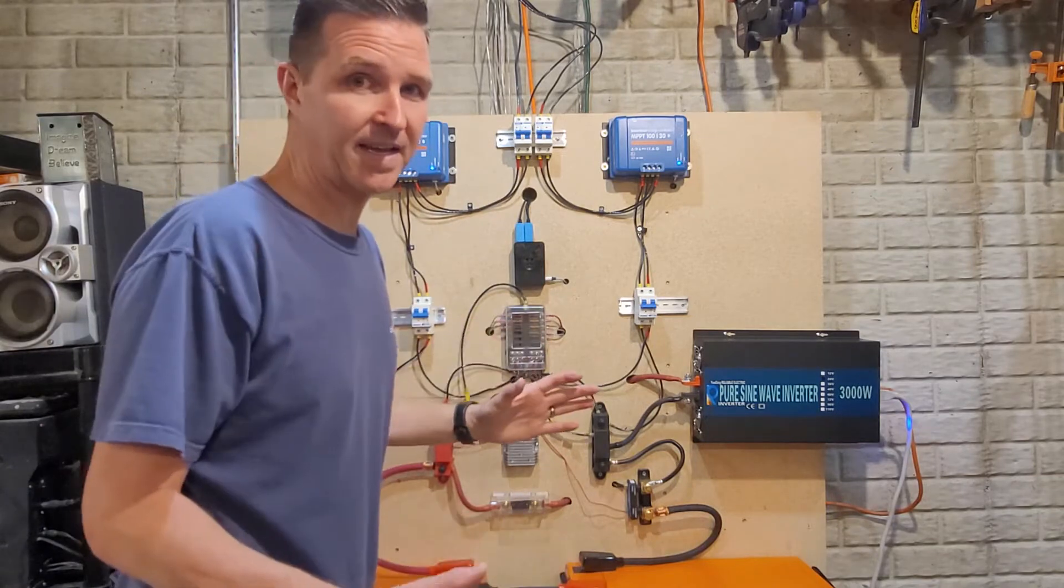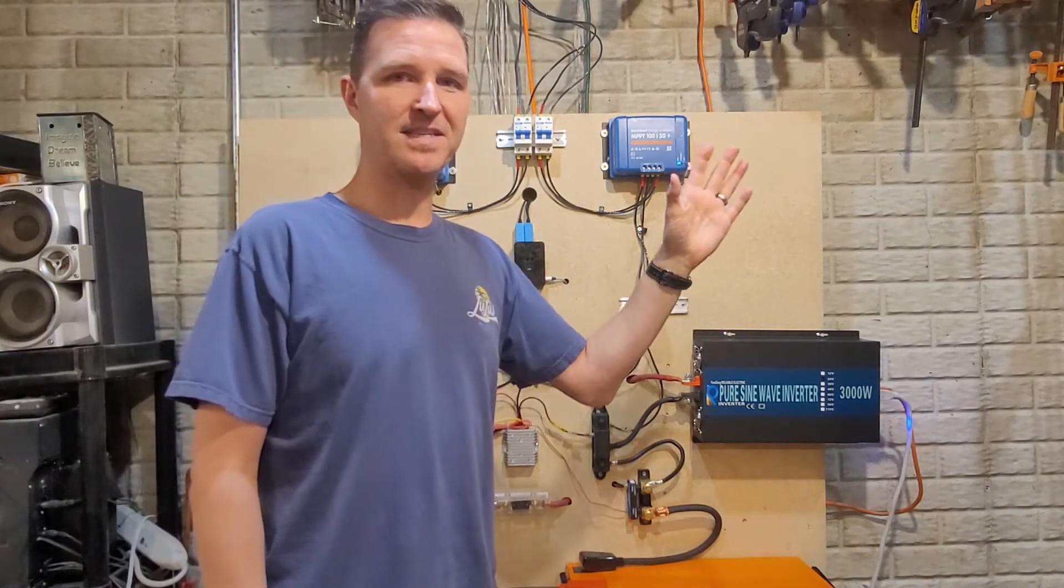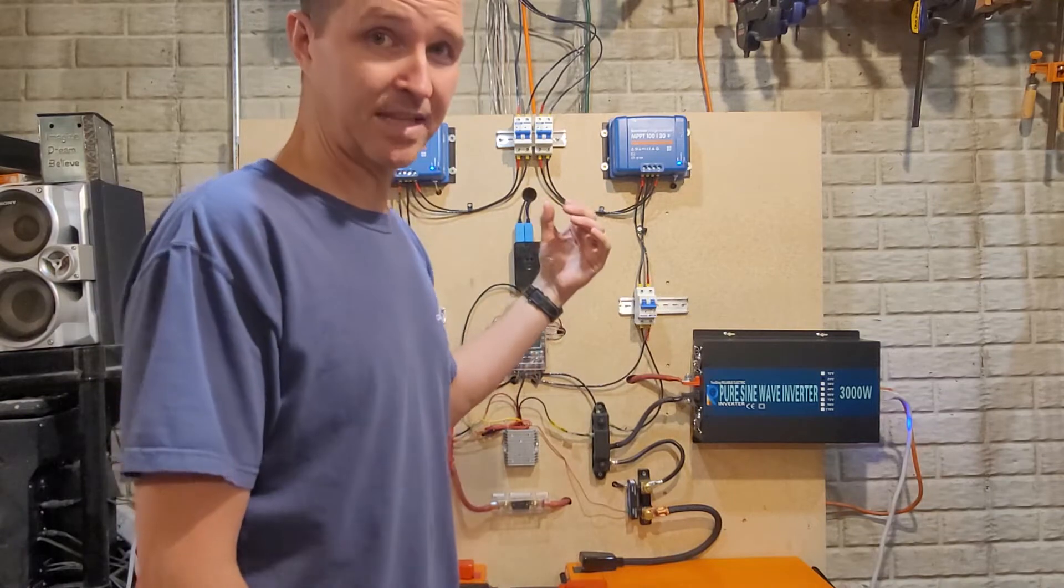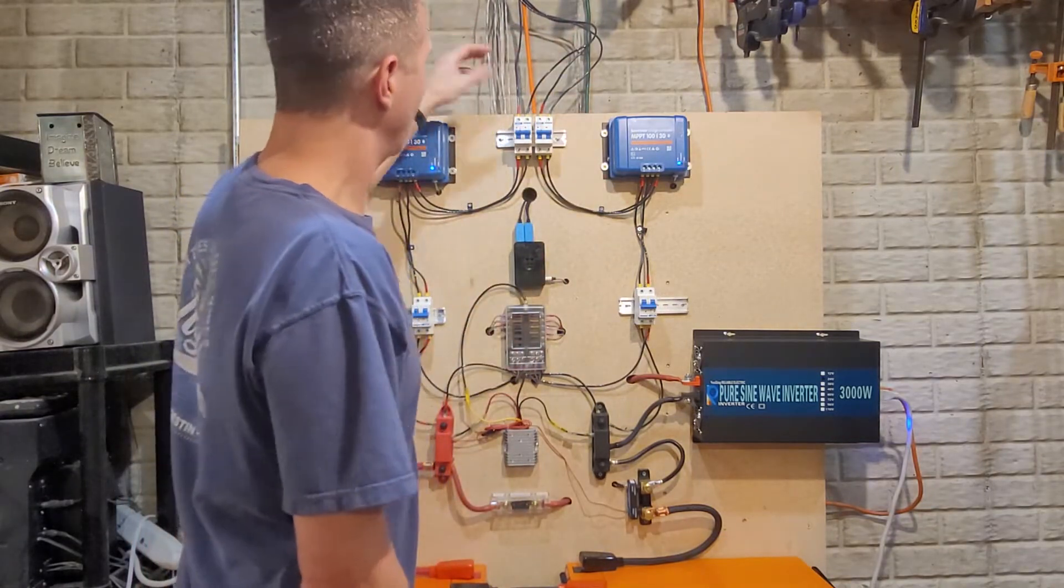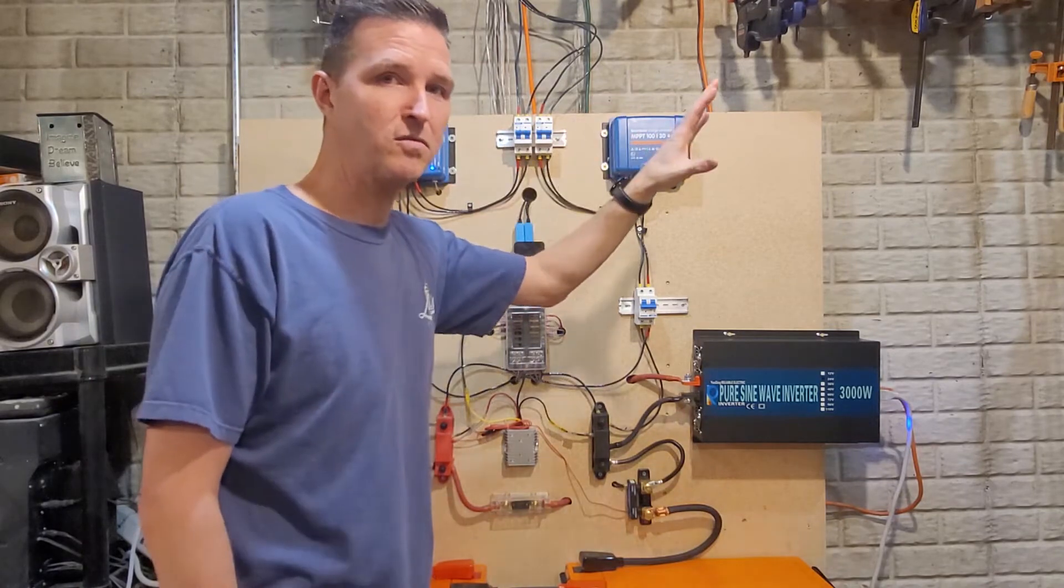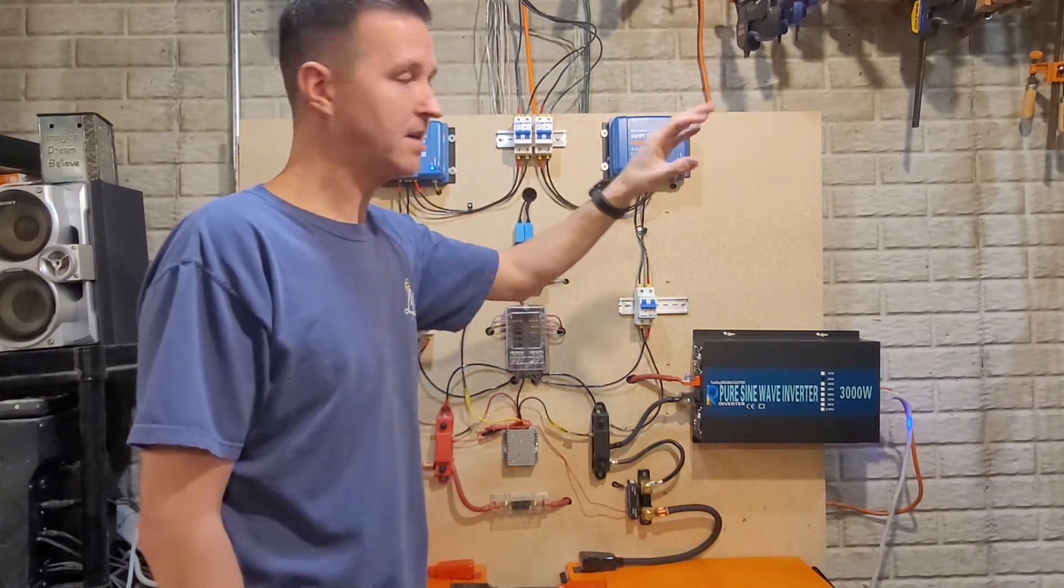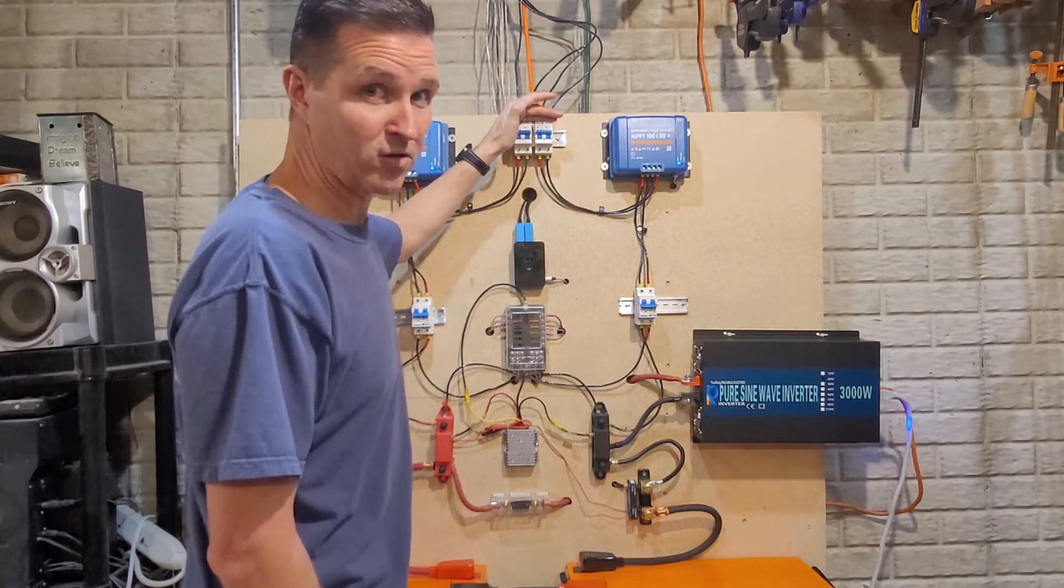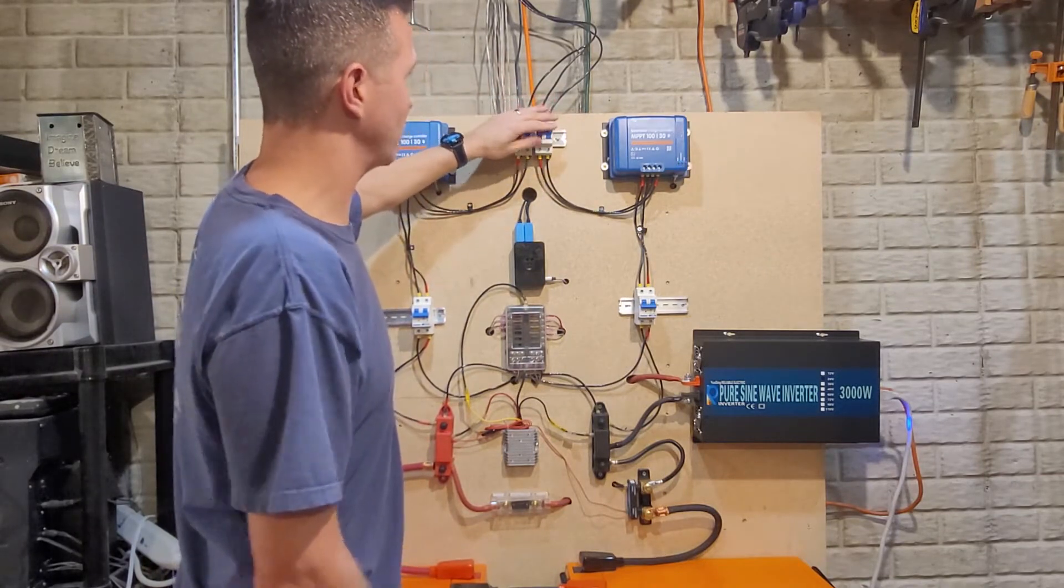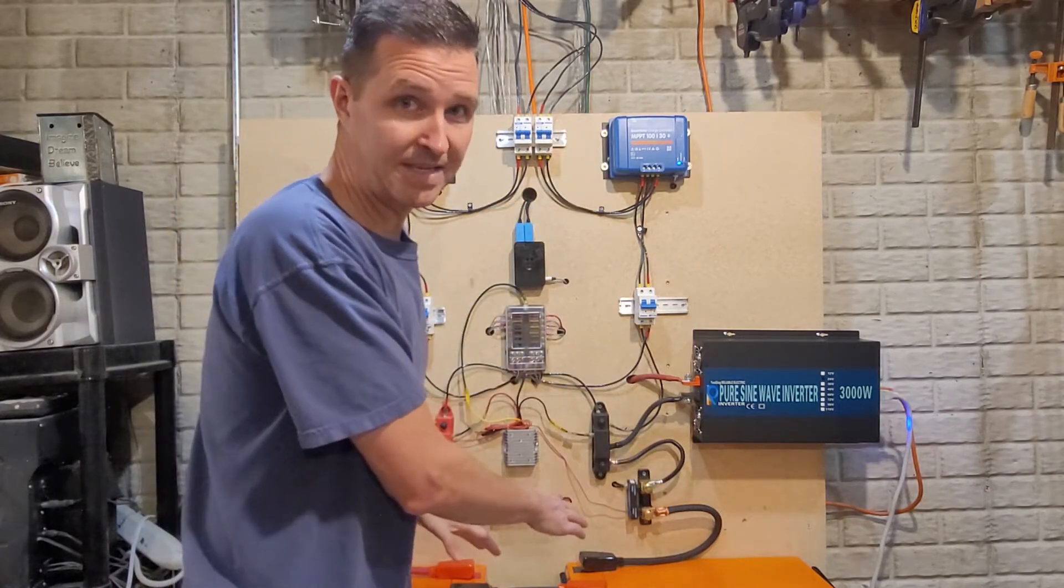First, I have solar panels outside capturing sunlight and bringing electricity in through these sets of wires. I have two sets of solar panels, so I have two sets of circuit breakers here so I can turn off my solar panels from the rest of my system.